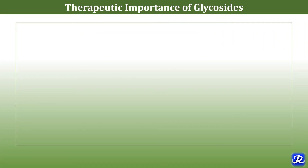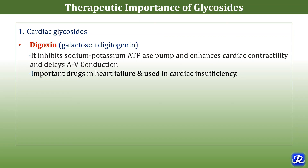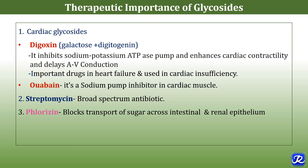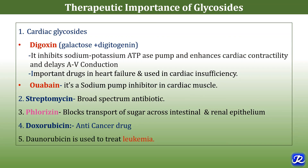What is the therapeutic importance of glycosides? Digoxin is a cardiac glycoside that inhibits the sodium-potassium ATPase pump, enhances cardiac contractility, and delays AV conduction; it is used in heart failure and cardiac insufficiency. Ouabain is a sodium-potassium inhibitor in cardiac muscle. Streptomycin is a broad-spectrum antibiotic. Phlorizin blocks transport of sugar across intestinal and renal epithelium. Doxorubicin and daunorubicin are anti-cancer drugs, with daunorubicin used to treat leukemia.